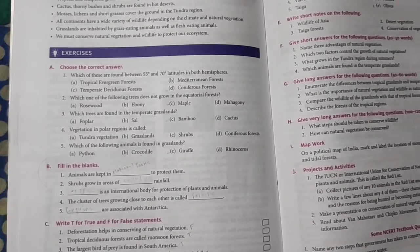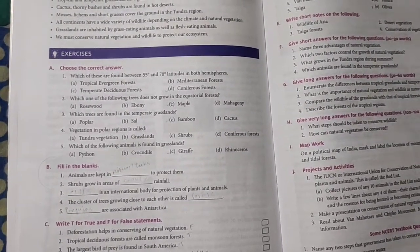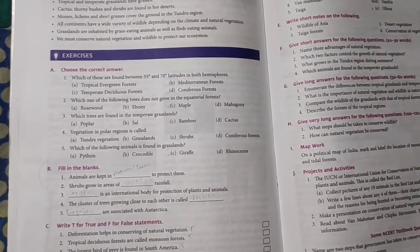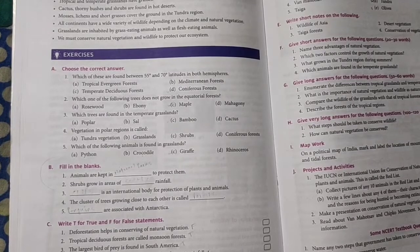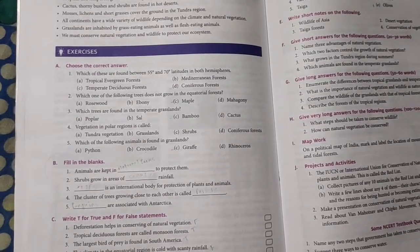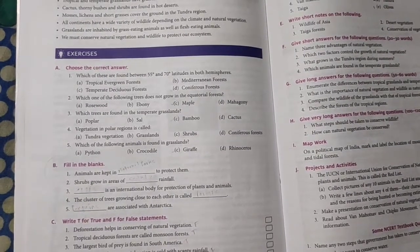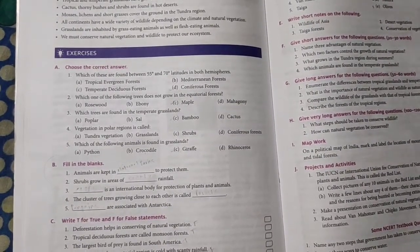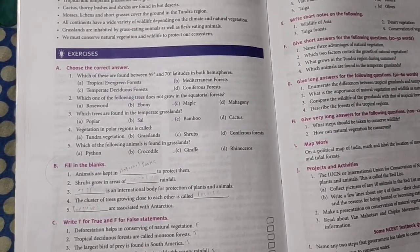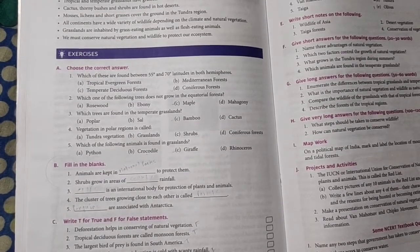Next, question B: fill in the blanks. Animals are kept in dash to protect them. Animals are kept in either national parks or in sanctuaries to protect them. Second: shrubs grow in the areas of dash rainfall. It will be lesser or scanty rainfall.